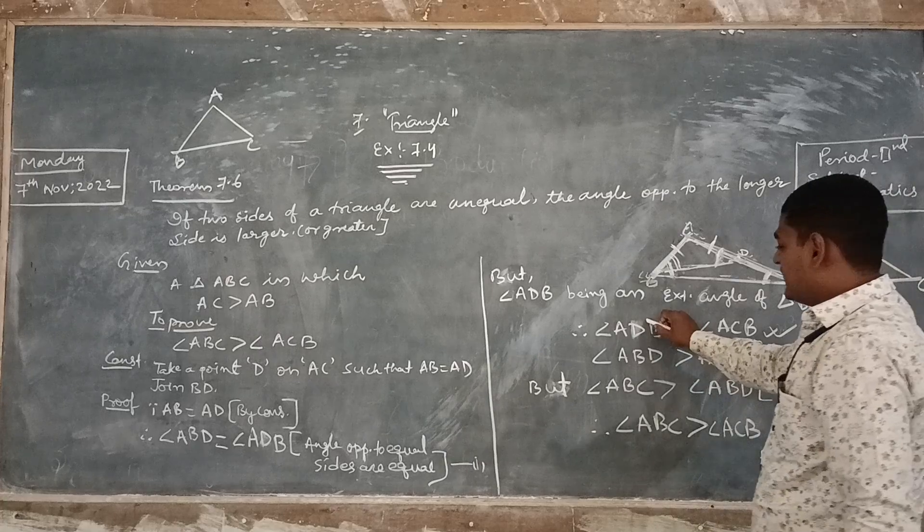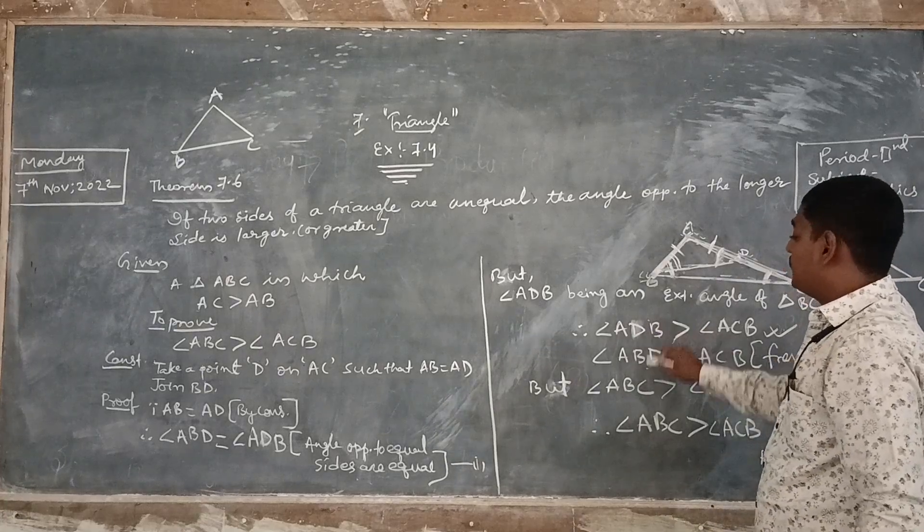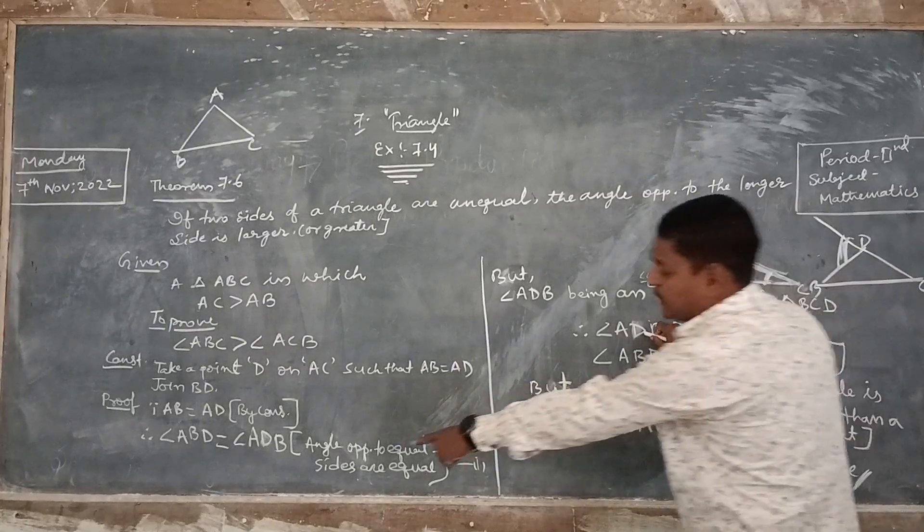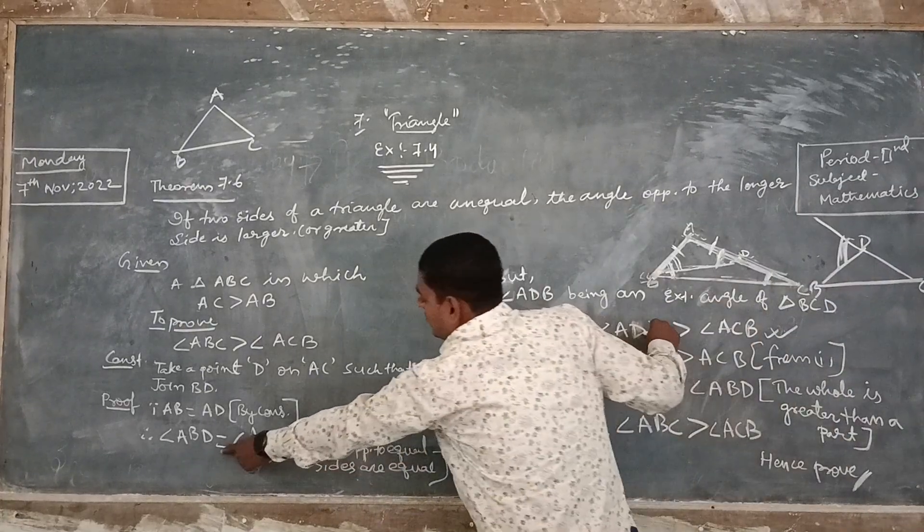Now, ADB can be written as ABD because ADB equals ABD from the first step. So we can substitute ABD in place of ADB, and ACB remains as it is.